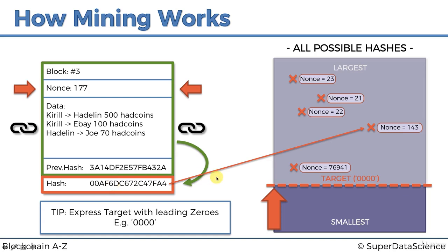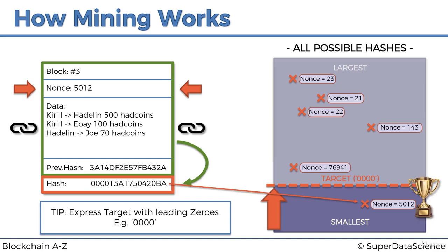SHA-256's promise is that nobody has been able to crack it. There have been many attempts, but people haven't gotten even close. Previous hash algorithms such as SHA-1, MD4, and MD5 have been cracked, but each time they've been updated into a stronger one. Now we have SHA-256, and there's also SHA-512 and SHA-3 - even stronger algorithms. But for now, blockchains use SHA-256. So in essence, that's how mining works: keep iterating the nonce until you get a hash below the target, and whoever gets there first adds the block.